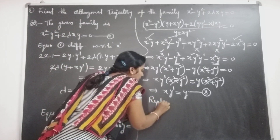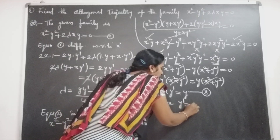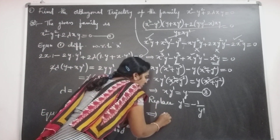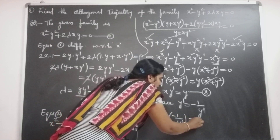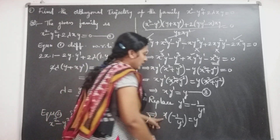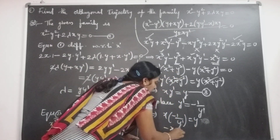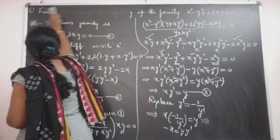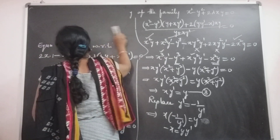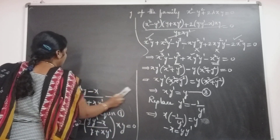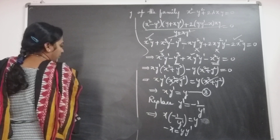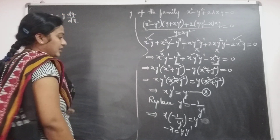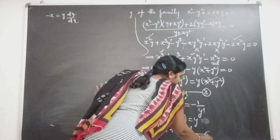For the orthogonal trajectory, replace y' with -1/y' in equation 3. The equation becomes x·(-1/y') = y, which gives -x = y·y'. Substituting y' = dy/dx: -x = y·(dy/dx). This is equation 4, the differential equation of the orthogonal trajectory.